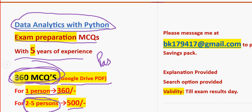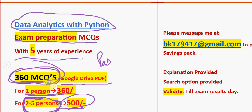Take it in a bulk group so that you can individually reduce the price. If you are one person, you can get it for 360 rupees. For two to five persons combined, the combined price will be 500 rupees. Please share this news with your friends and classmates and let them know about this offer.